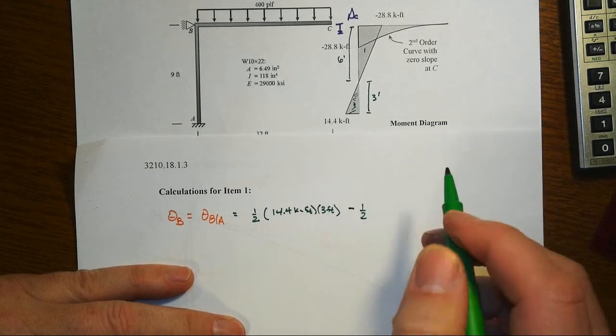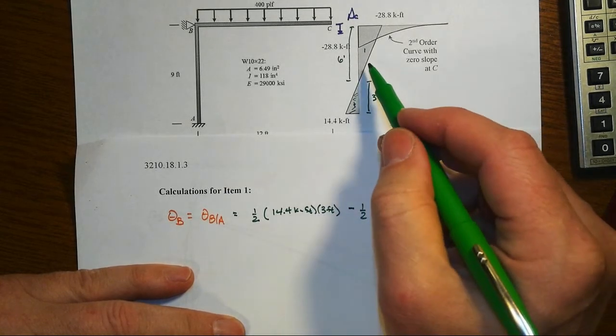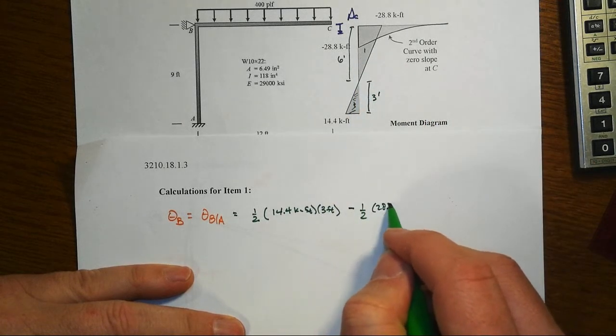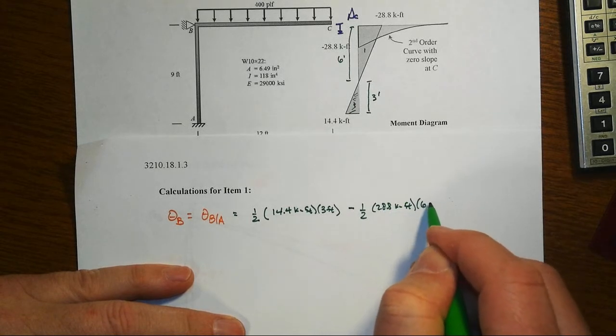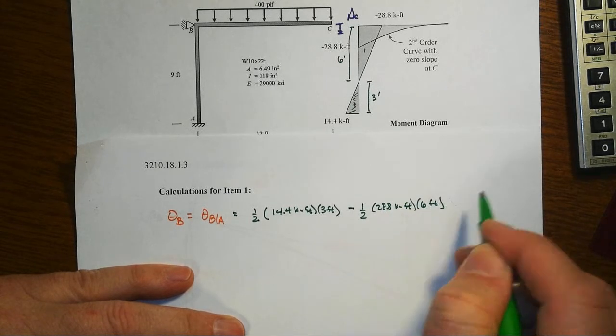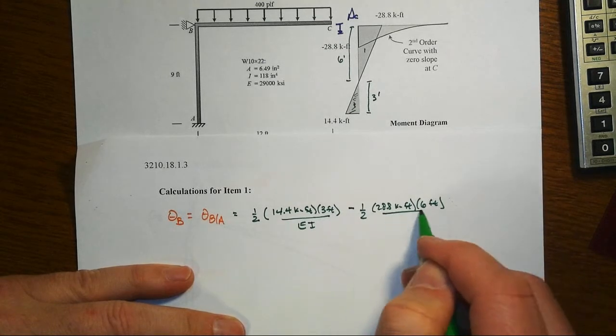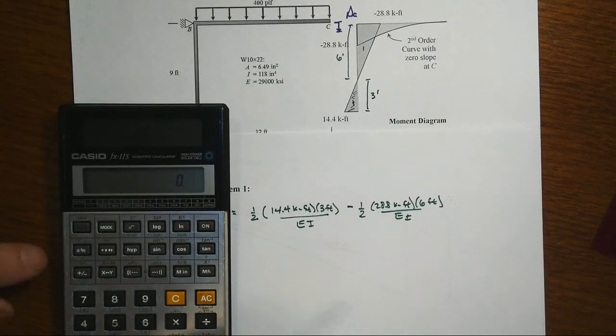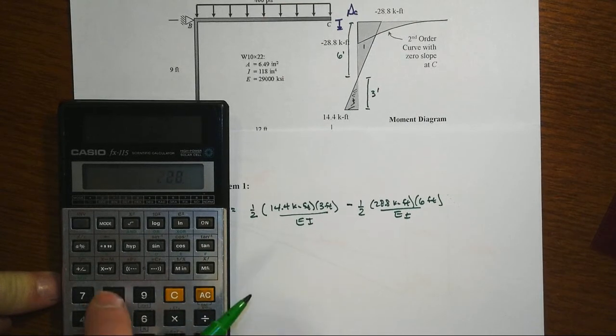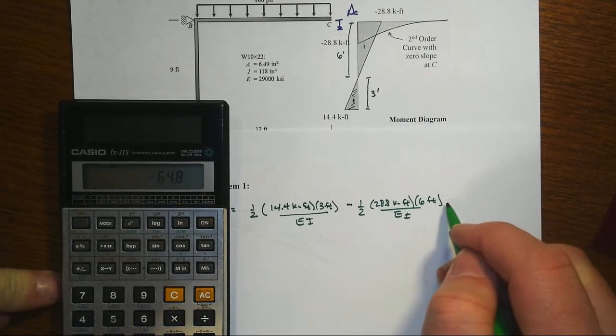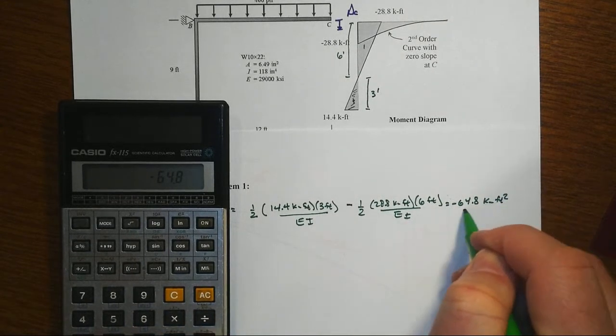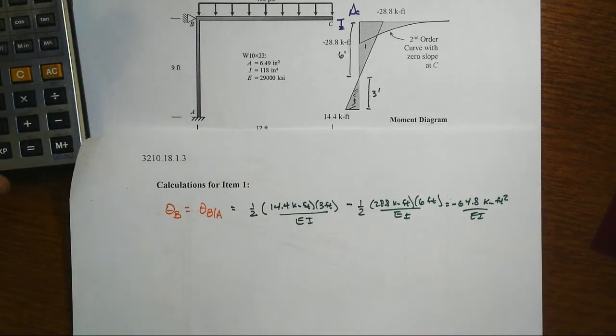and then we're going to go the other direction at one half of then, let's see that base is 28.8 kip feet and that height is six feet, and all of that then gets divided by EI since that's constant for everything here. So we got 14.4 times three divided by two minus then 28.8 times six divided by two,